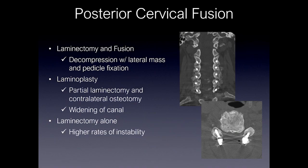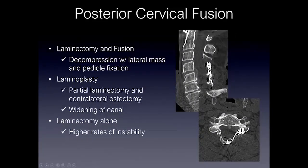Posterior cervical fusion includes laminectomy and fusion, and laminoplasty. Laminectomy and fusion involves decompression via complete removal of the lamina and placement of screws to result in fusion. These screws are typically lateral mass screws and/or pedicle screws resulting in fixation. Laminoplasty is when a hemi-laminectomy is performed, an osteotomy is performed on the contralateral lamina, the lamina is lifted, and a metallic construct is placed to mimic the lamina that was removed.